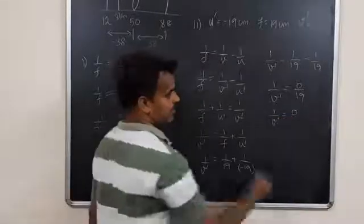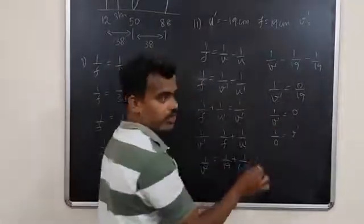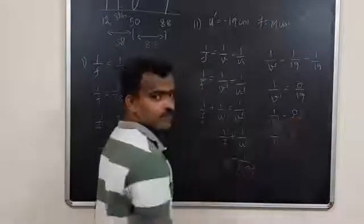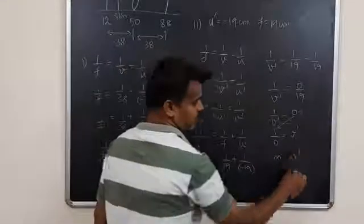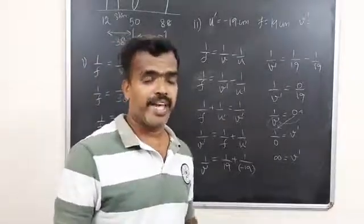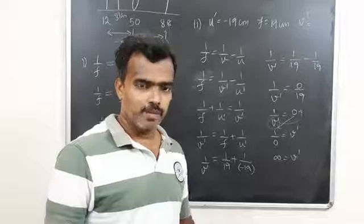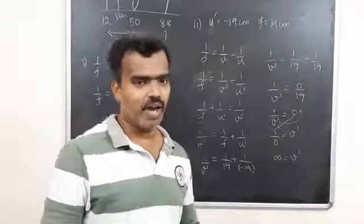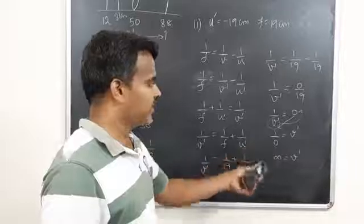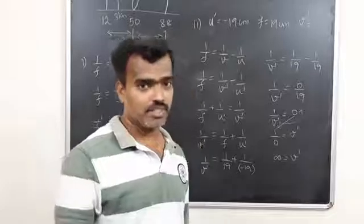1 by V dash equals zero. Therefore, V dash equals 1 by 0, which equals infinity. So in that case, the image will be at infinity.